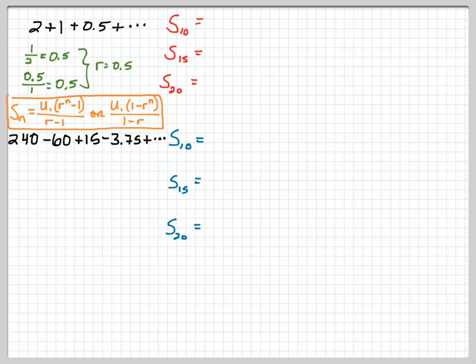So plugging it into that first equation we've got 2 times 0.5 raised to the power of 10 minus 1 over 0.5 minus 1. Now as I just start punching this into a calculator, I get this massive number where I've got 0.00098 minus 1 over negative 0.5. And as I simplify that with my calculator, I'm going to get 3.996.